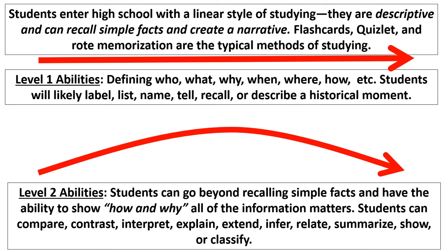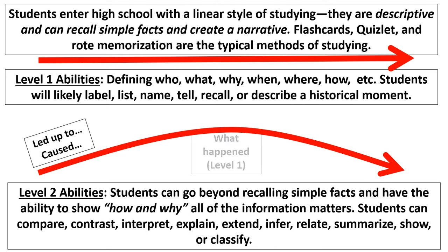Students can label, recall, and describe, but they struggle with what I call level-two abilities. I want you to transition to level-two studying when preparing for this class. In particular, when you study, have this broader approach: first, study what led up to something — what caused something to happen.